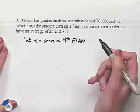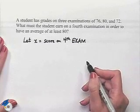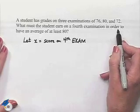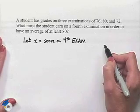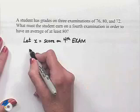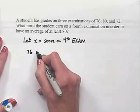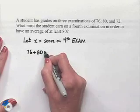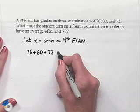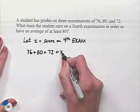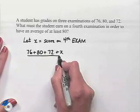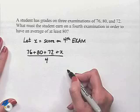Since we're being asked to find an average, we know that in order to average, we add up our values and then divide by the number of values that we're working with. Here we're going to have known scores of 76, 80, and 72. We're going to add to that the unknown value x and divide by 4 in order to get the average.